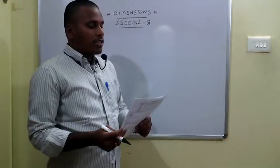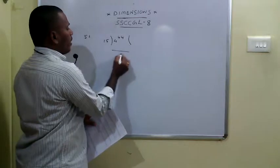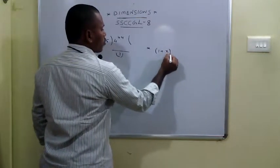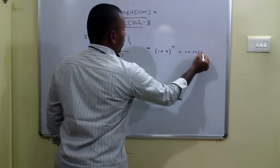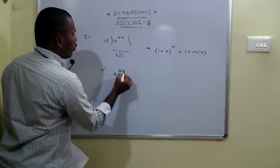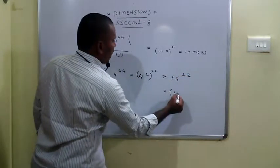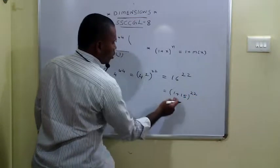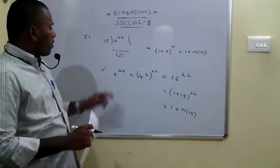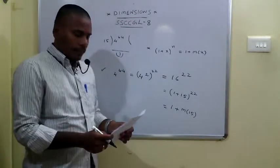In the 51st question, they asked us to find the remainder when 4 power 44 is divisible by 15. We discussed the logic that if we have 1 plus x to the power of n, we can express it as 1 plus multiple of x. So 4 power 44 can be expressed as 4 squared to the power 22, which is 16 to the power 22. We can express 16 as 1 plus 15, so 1 plus 15 to the power 22 is 1 plus multiple of 15. When divided by 15, the remainder is 1.